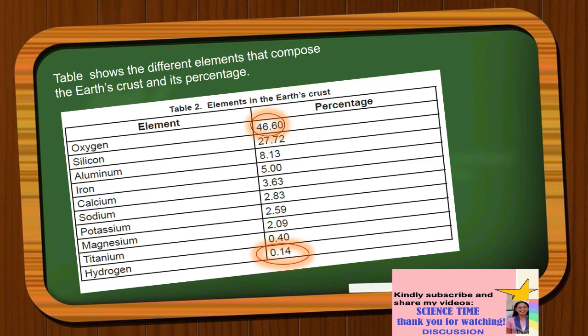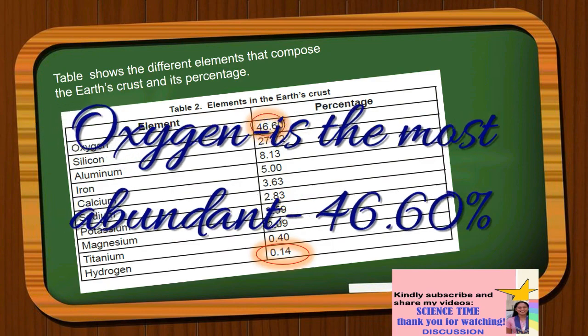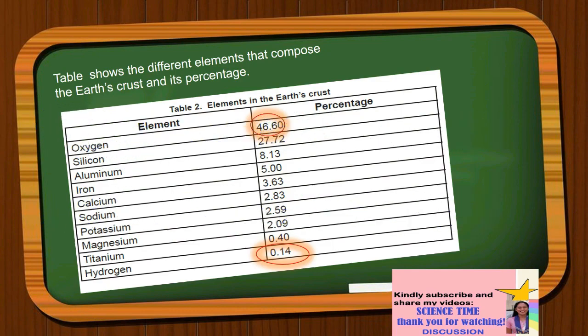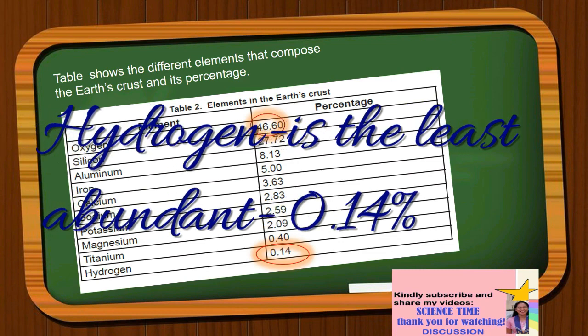The table shows the different elements that compose the Earth's crust and their percentages. It shows that oxygen is the most abundant element in the Earth's crust at 46.60%, while hydrogen has the least percentage at 0.14%.